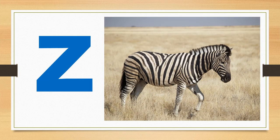The letter Z says Z. Z says Z. The word zebra starts with the sound Z. Z. Zebra. Z. Say it with me. Z. Z. Zebra. Z.